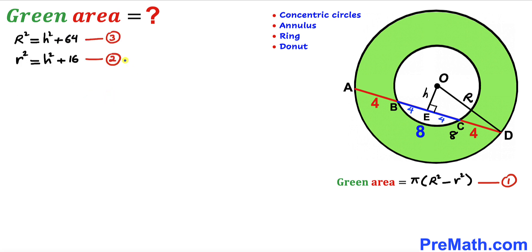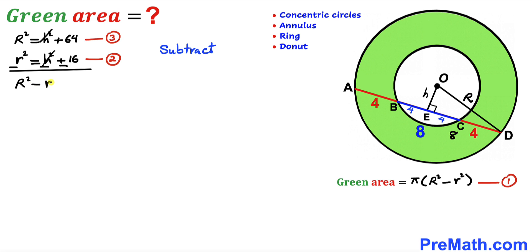We now have equation 2 and equation 3. Subtracting equation 2 from equation 3, the h² terms cancel out, giving us uppercase R² minus lowercase r² = 64 − 16 = 48. So the difference of the squared radii turns out to be 48.